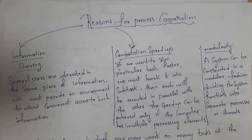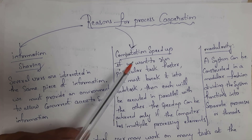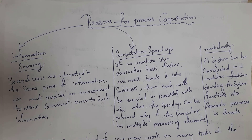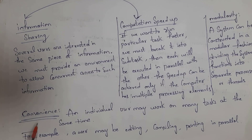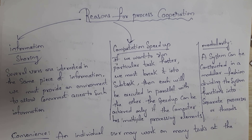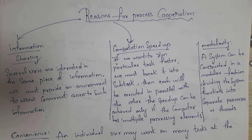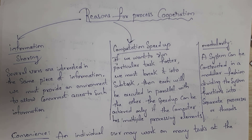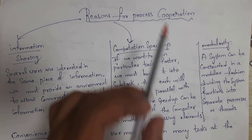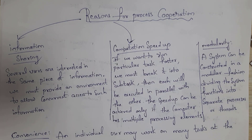But what is the reason for process cooperation? There are four reasons: first is information sharing, second is computation speedup, third is modularity, and fourth is convenience. For information sharing, there are many users who want to exchange information between each other, so in order to exchange information we need cooperative processes. By using cooperative processes, processes can cooperate with each other in order to exchange information.